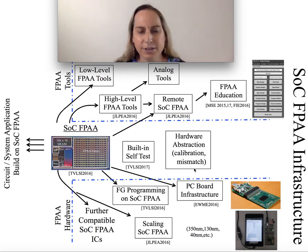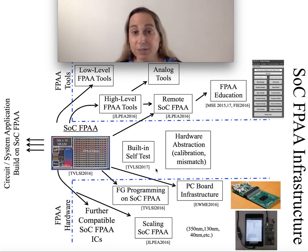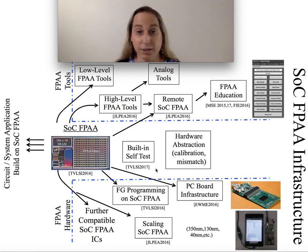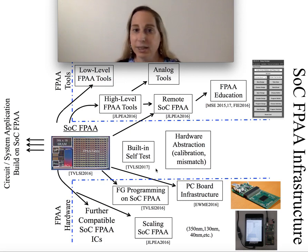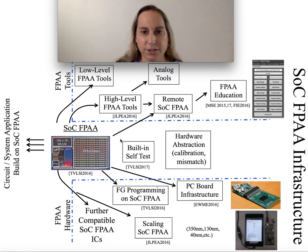But then that requires additional questions — built-in self-test, hardware abstraction, and how do you calibrate and deal with mismatch out of most of these structures. Now you might say, this is all floating gates, so I can program out all the mismatch — and this is correct. But there may be an initial mismatch because of how devices are initially coming back and how things are set up. Everyone has to deal with this at some level; the question is how do you deal with it systematically.